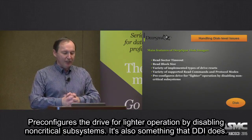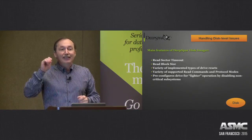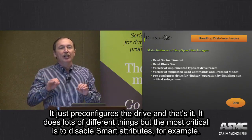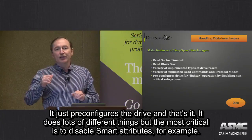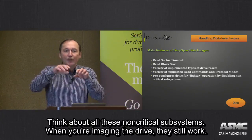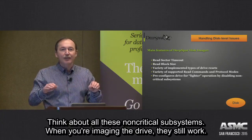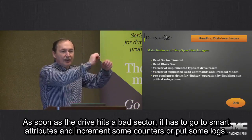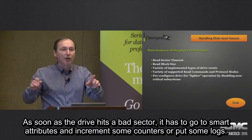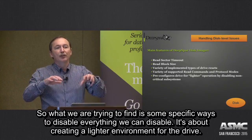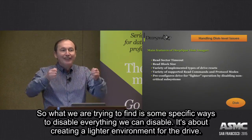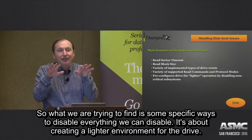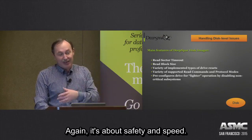Pre-configure the drive for lighter operation by disabling non-critical subsystems — that's something DDI does. It's called drive pre-configuration. It does lots of different things, but the most critical is disabling SMART attributes. When you're imaging the drive, these non-critical subsystems still work. As soon as the drive hits a bad sector, it has to go to SMART attributes and increment some counters or put some logs. We try to find all vendor-specific ways of disabling everything we can, because we are creating a light environment for the drive. Again, it's about safety and speed.